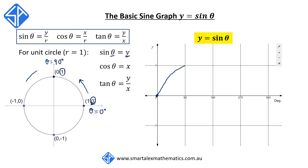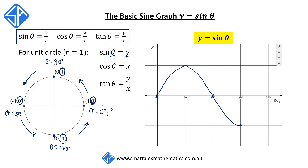Then as we continue from 90 degrees to 180 degrees, the y coordinate goes from one back down to zero. From 180 degrees to 270 degrees, the y coordinate goes from zero to negative one. And as we continue back up to 360 degrees — which is the same point as zero degrees — the y coordinate goes from minus one back to zero. We can keep repeating this, which is why we get a cyclical pattern for the sine graph.